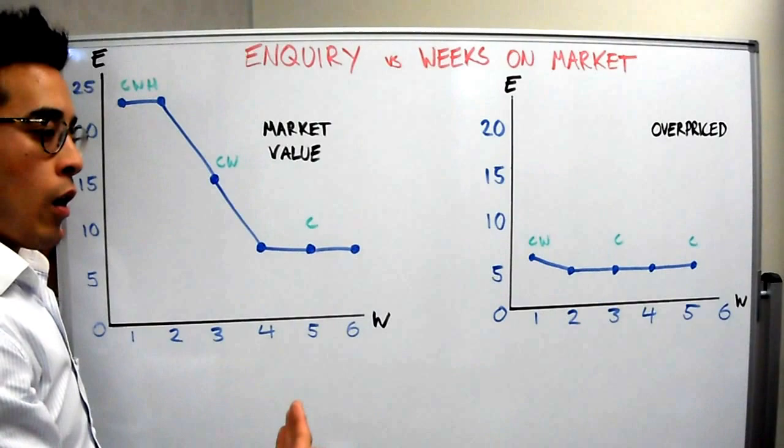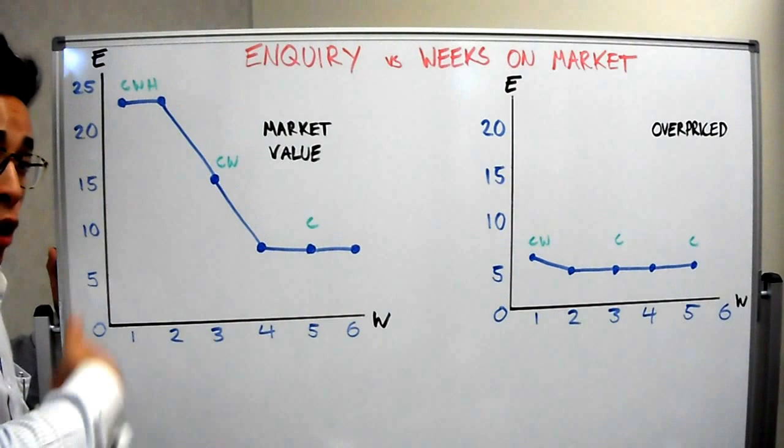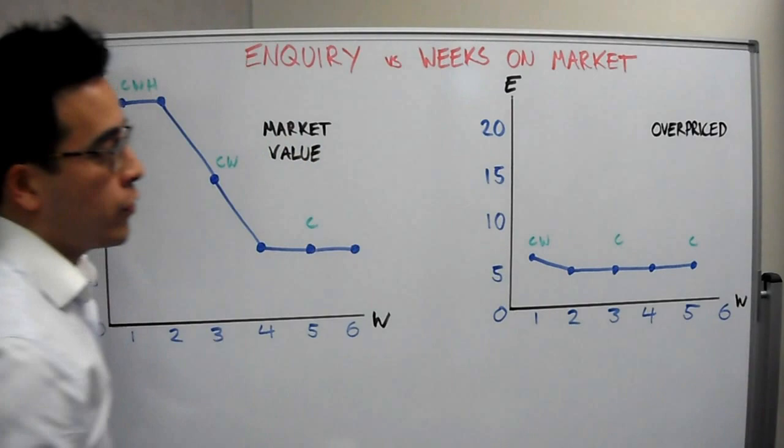So that's what happens when you price the property correctly - you get a spike at the start. This is important in marketing because this is launch time. Sometimes clients say 'hey, if it doesn't work out straight away, then we'll do it properly.' According to this chart, you shouldn't be doing it that way. Your first weeks are your most crucial, so you need to start off with a bang. You need to launch the product, you need to launch the property correctly.